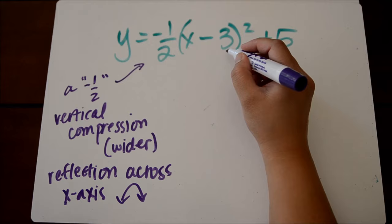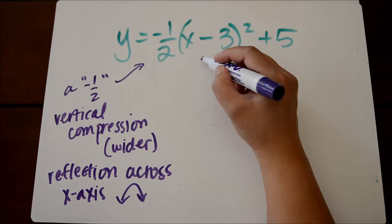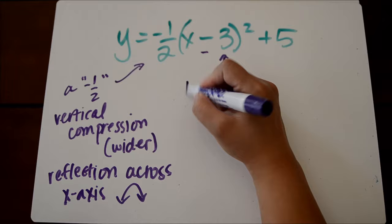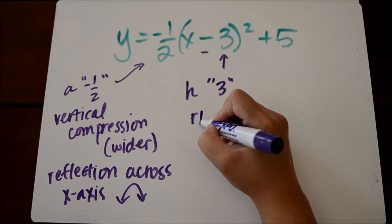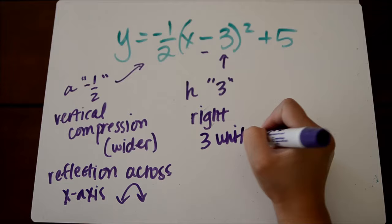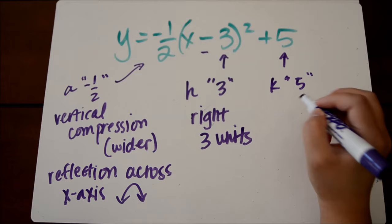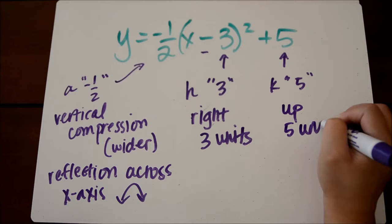Looking at our h value here, since it says minus 3, and that minus sign was already in vertex form, so that 3 is actually a positive 3. So our h value is positive 3, meaning our graph is translated to the right 3 units. And our k value does what we think it should do. So it's a positive 5, and that means our graph translated up 5 units compared to the parent function.